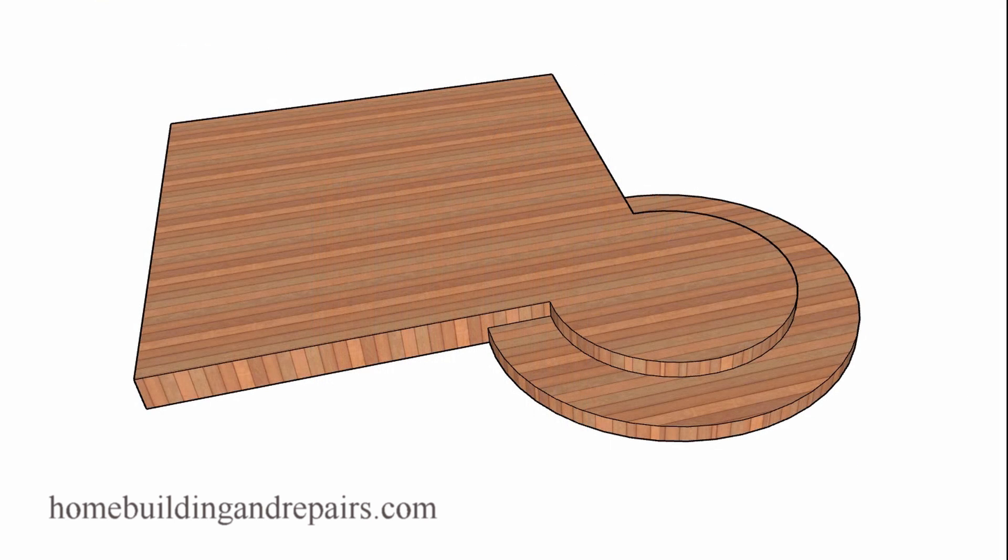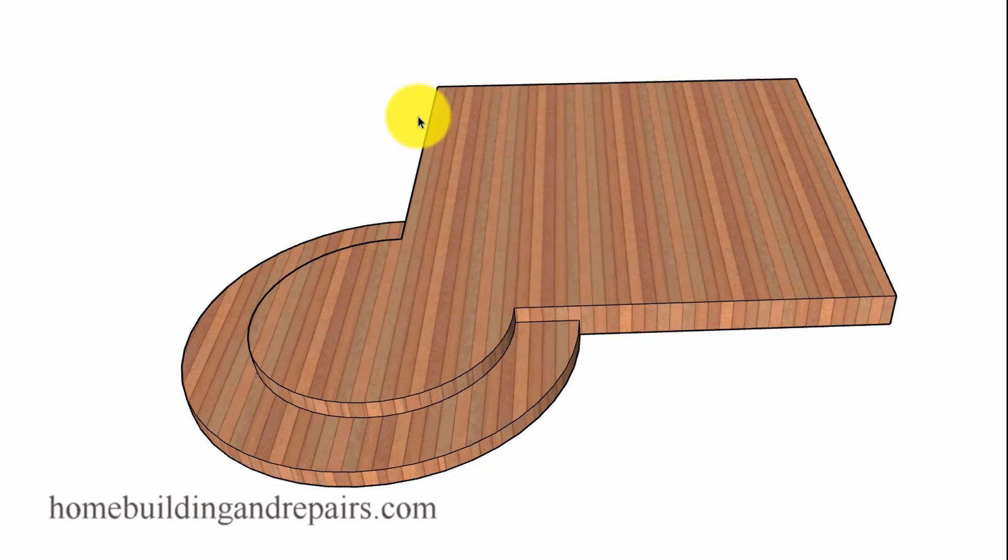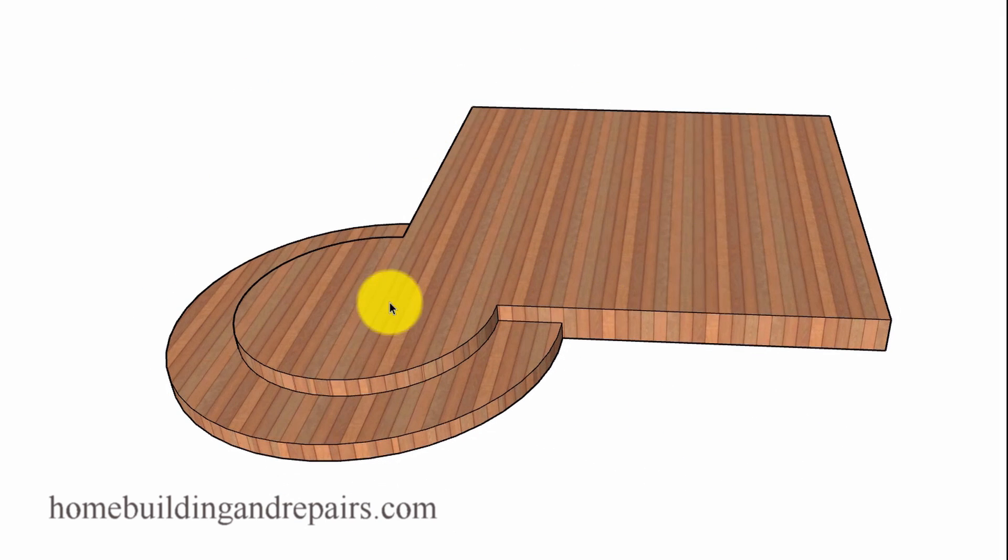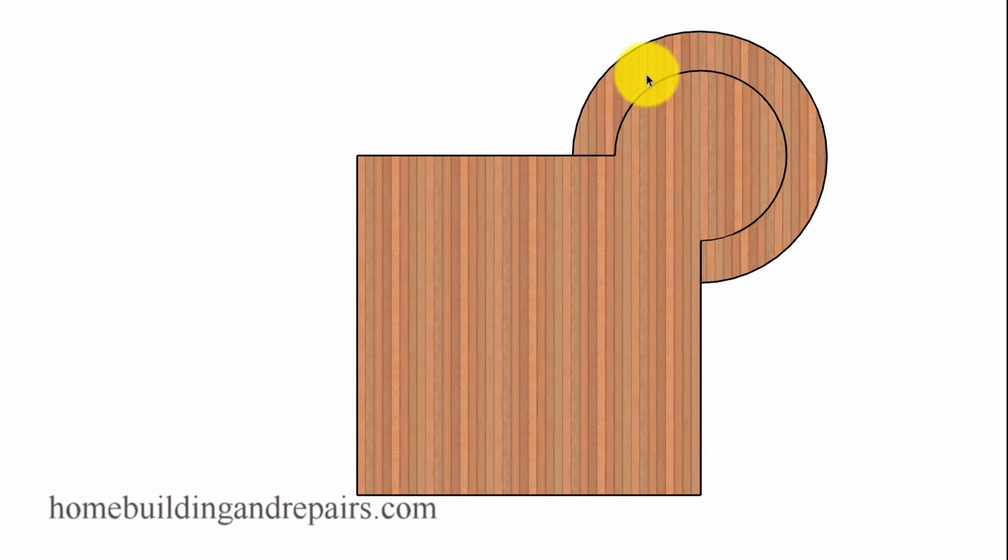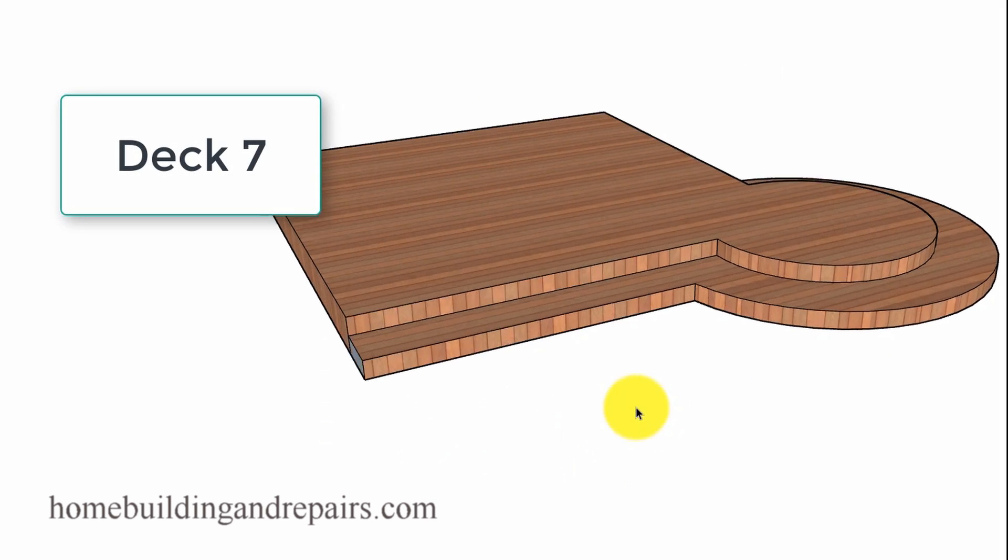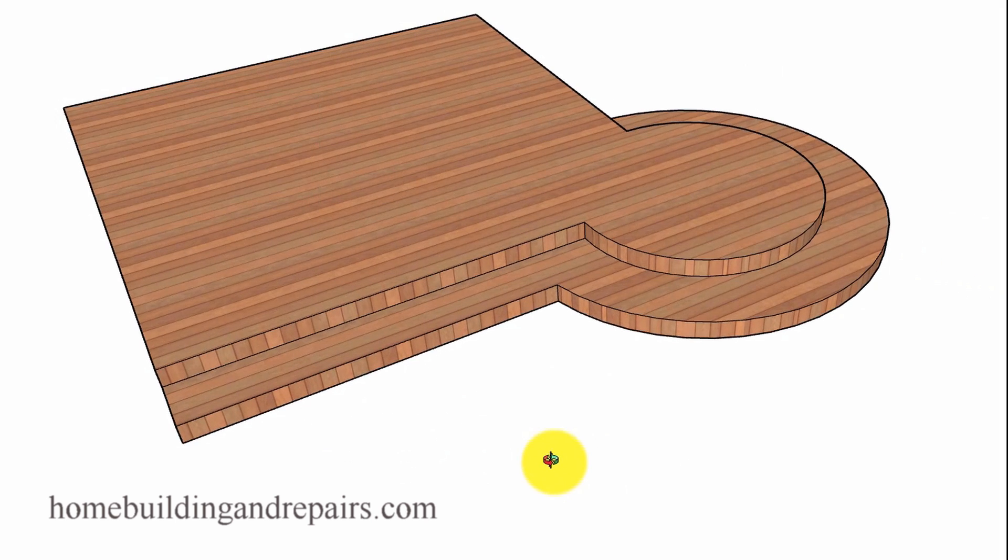And of course, this is what it would end up looking like. So a square deck here with a kind of a pop out circle and then a step going around. And of course, you can always have a step coming around like this and then have it come over here. You just simply add a step here to make it work out to where you would have a different type of design.